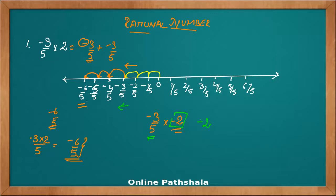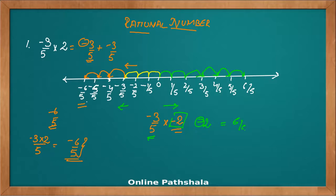But as I have to jump minus 2 times, it reverses and I have to travel in the positive direction. Traveling 1, 2, 3 — this is one jump of minus 3 by 5 into minus 1, then reverse direction 1, 2 and 3. This is minus 3 by 5, 2 times in the reverse direction — the reverse is because of the minus 2 — and the answer I get is 6 by 5.